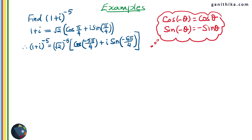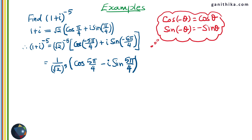Using the trigonometric identities cos(−θ) = cosθ and sin(−θ) = −sinθ, we convert the expression. Changing (√2)^(−5) to 1/(√2)^5 using rules of exponents, cos(−5π/4) becomes cos(5π/4), and sin(−5π/4) becomes −sin(5π/4). Substituting, we arrive at the simplified form.